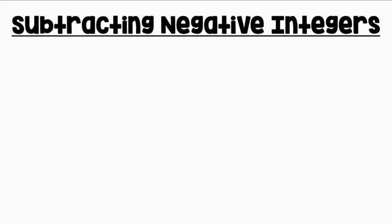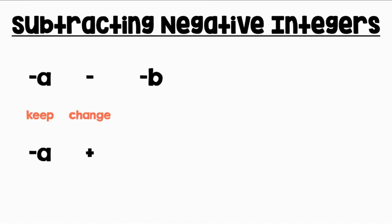Let's review our rule for subtracting negative integers. If we have two integers, negative A minus negative B, we will keep negative A, change subtraction to addition, and change negative B to positive B.